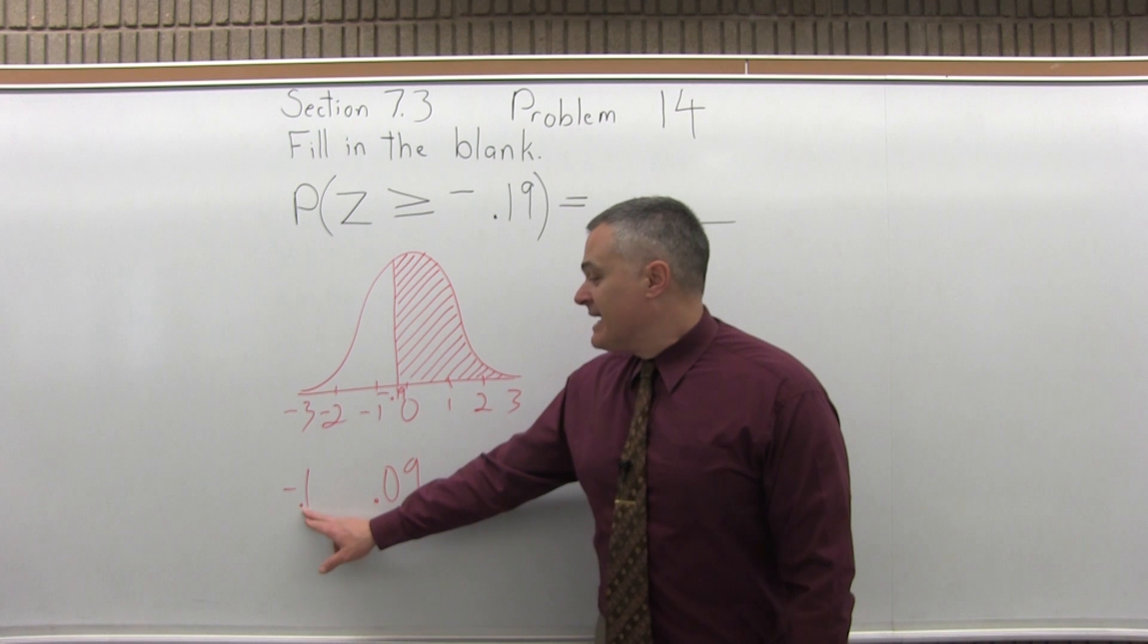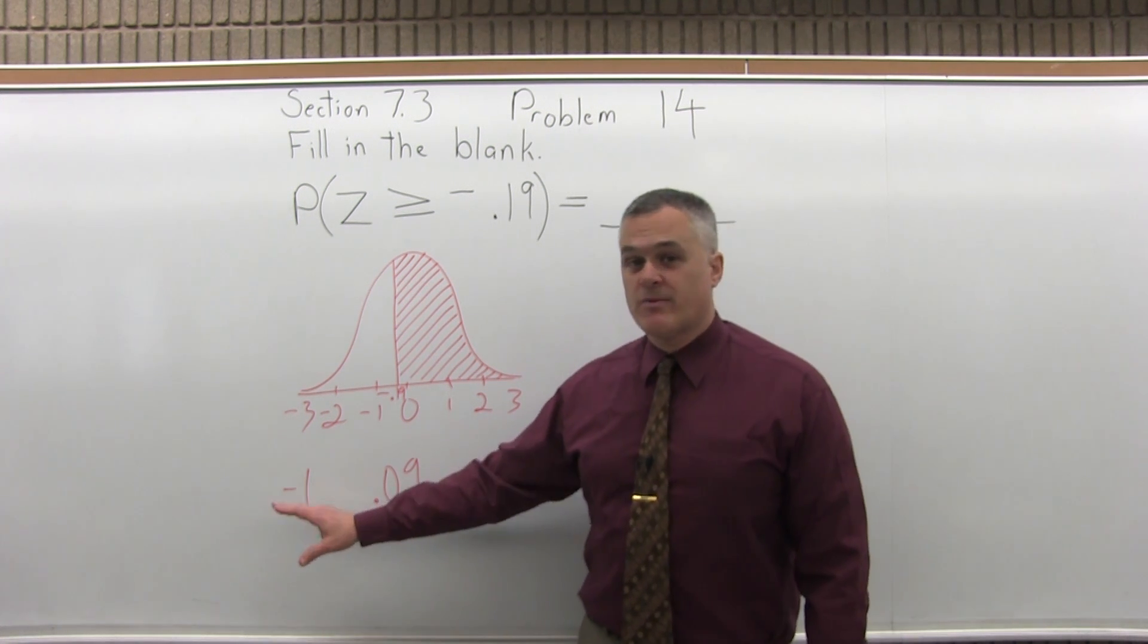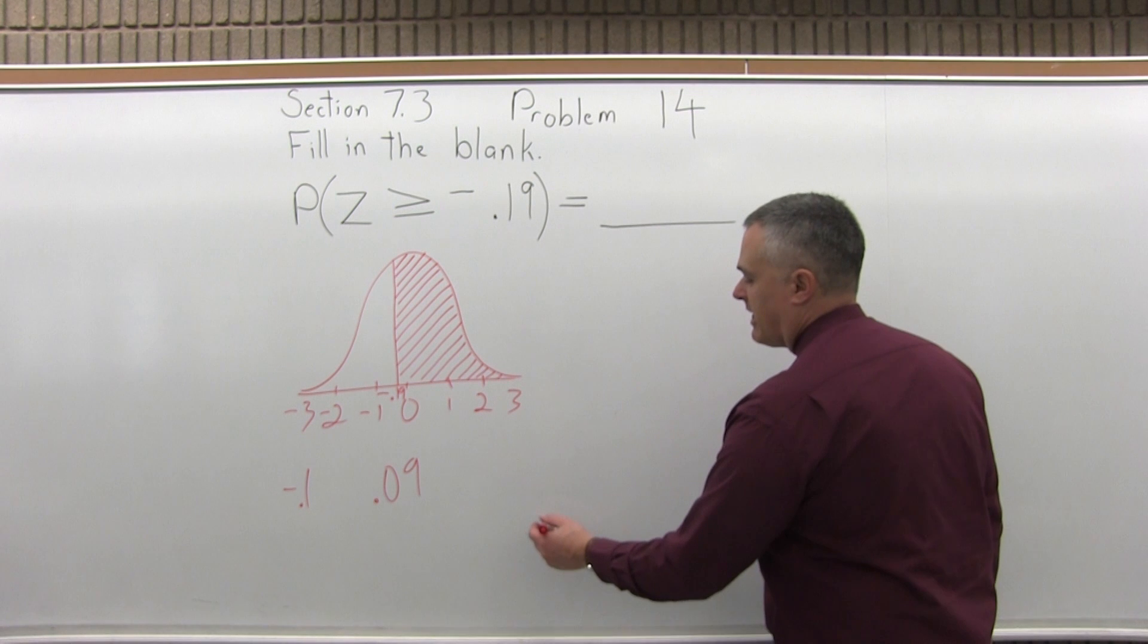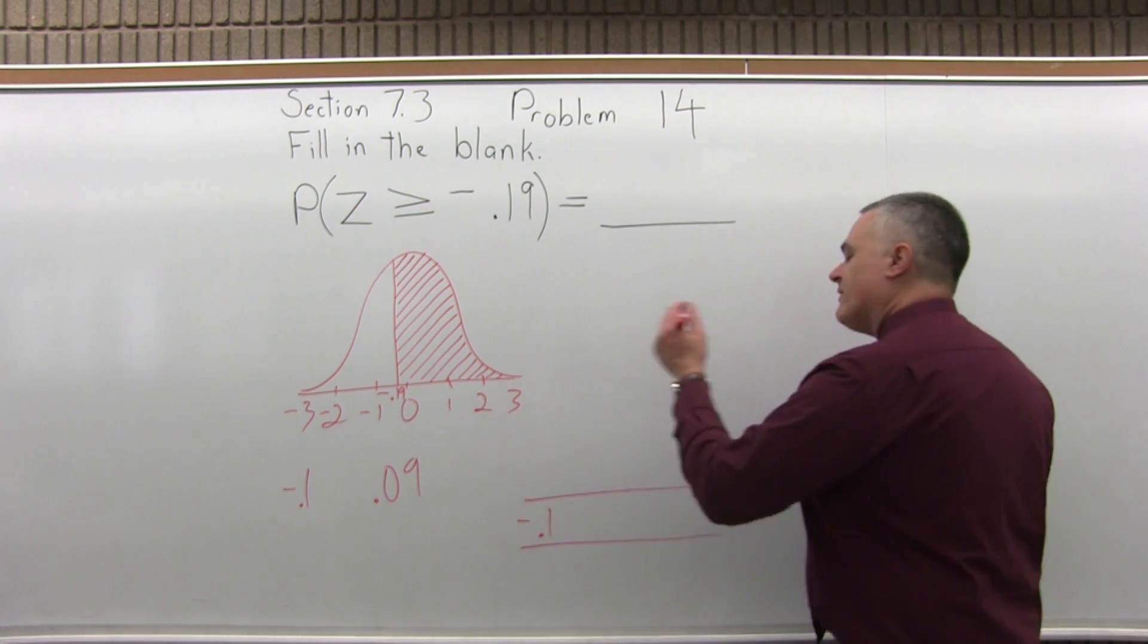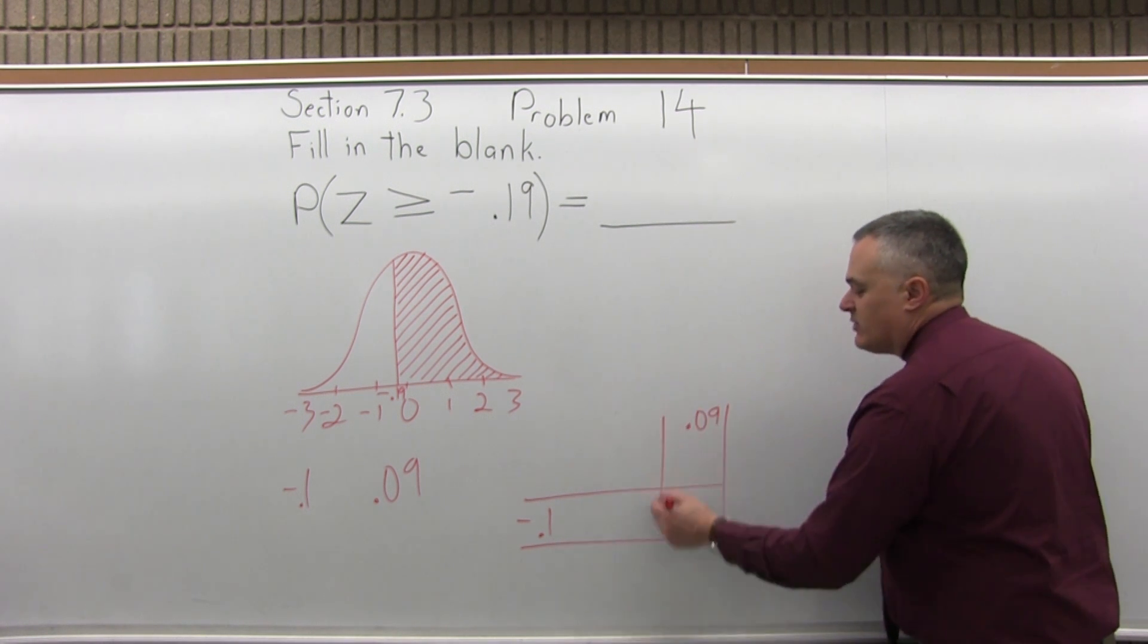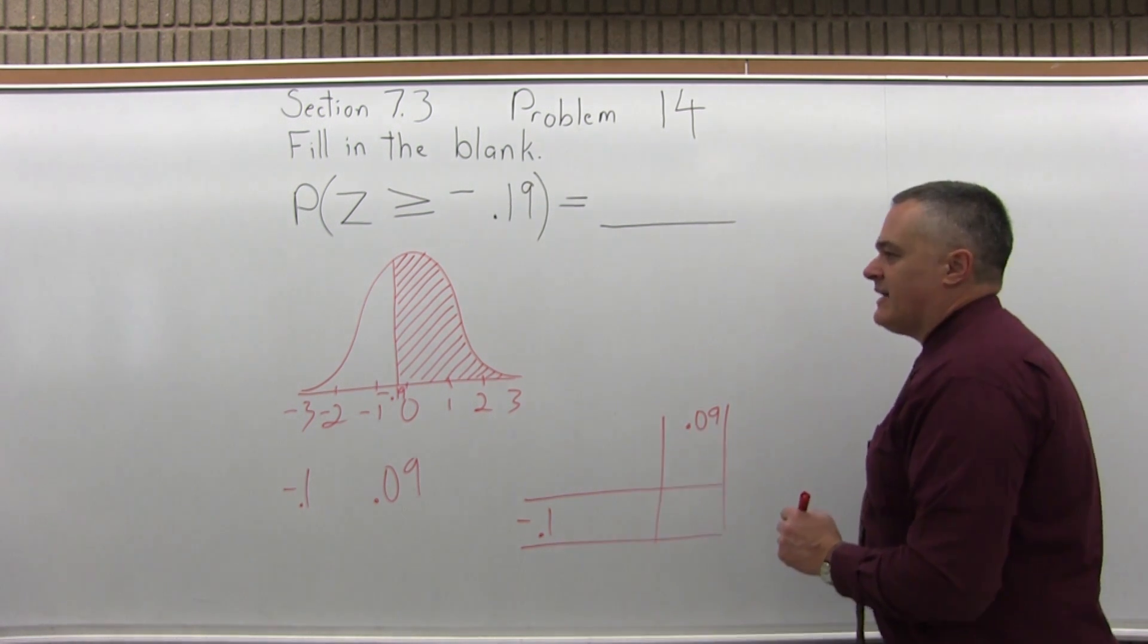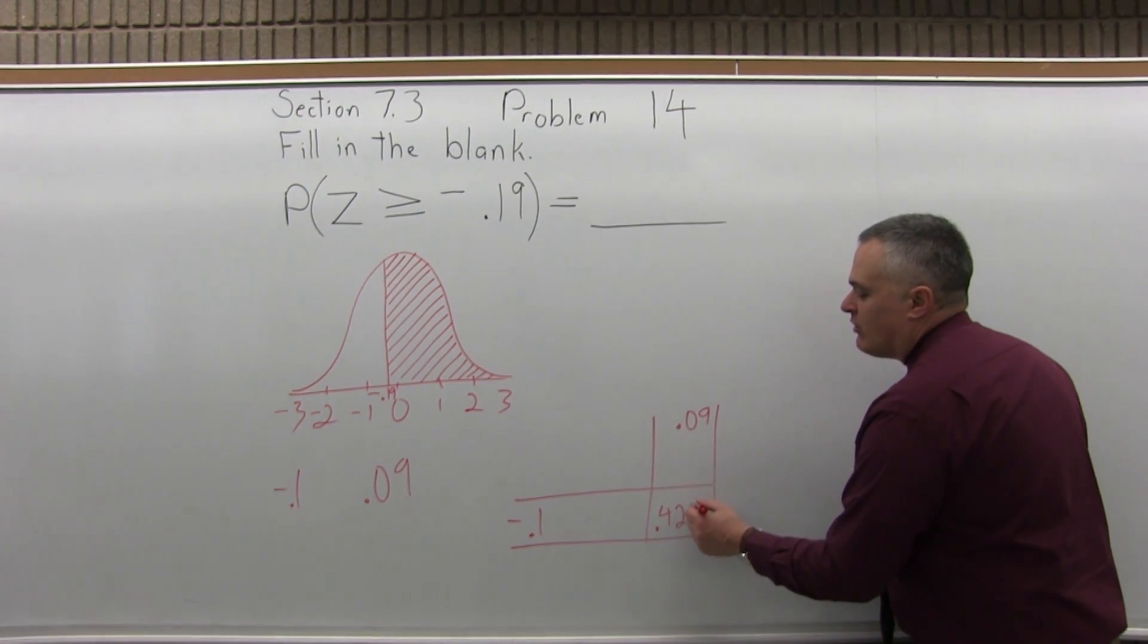Now I'm going to go to the negative .1 row of my chart. That's one row up from the very bottom in the negative portion of the chart. And I want to follow that negative .1 row out until the very last or rightmost column, which is the .09 column, and see where those two intersect. And they intersect at .4247.